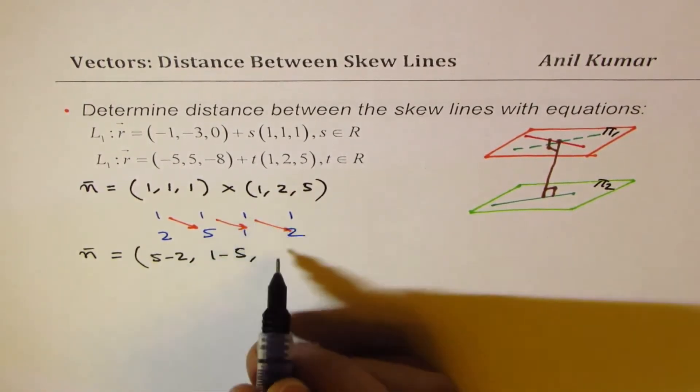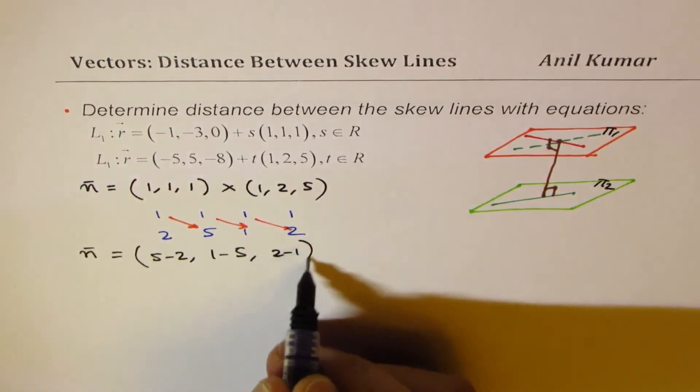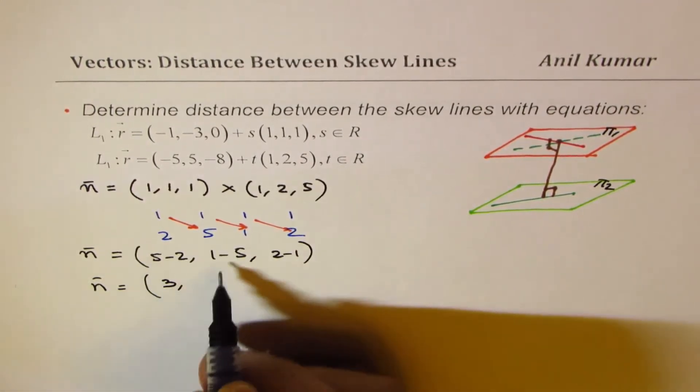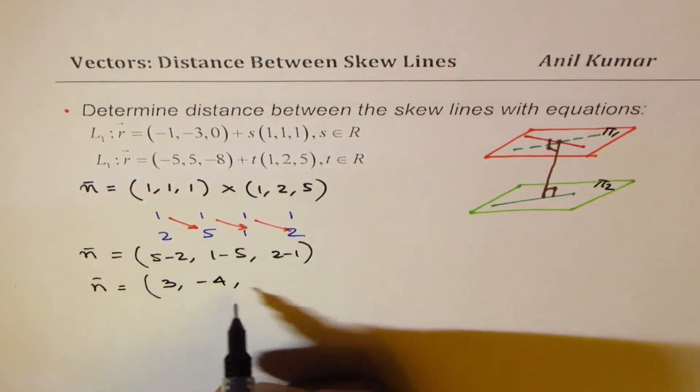We'll get a few values. Y component: we can write the line for n as 5 minus 2, 3, 1 minus 5's minus 4 minus